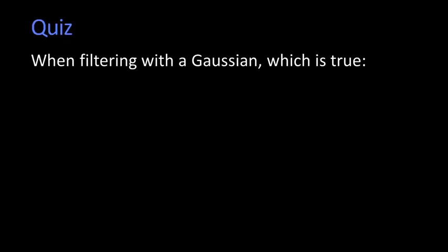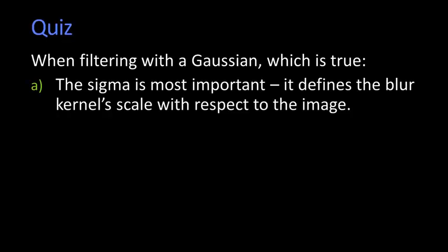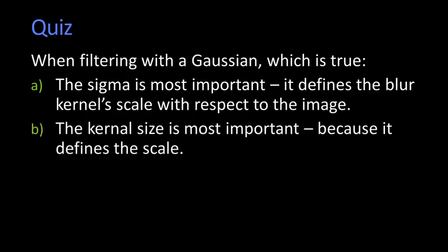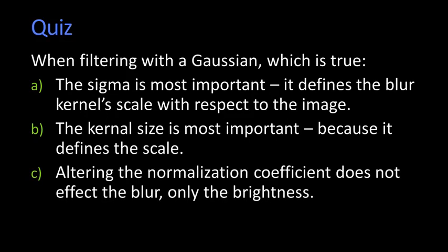So when filtering with a Gaussian, which is true? Is it A? The sigma is most important. It defines the blur kernel's scale with respect to the image. Is it B? The kernel size is most important because it defines the scale. C, altering the normalization coefficient, that constant on the front, has no effect on the blurring. It only affects the total brightness. And D, A and C.